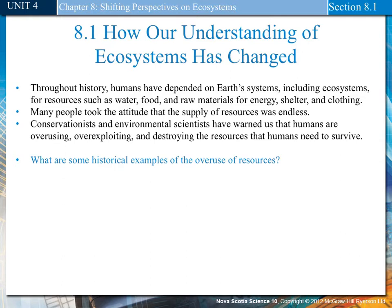How our understanding of ecosystems has changed. Throughout history, humans have depended on the Earth's systems, including ecosystems, for resources such as water, food, and raw material, for energy, shelter, and clothing. Many people took the attitude that the supply of resources was endless. Conservationists and environmental scientists have warned us that humans are overusing, over-exploiting, and destroying the resources that humans need to survive.